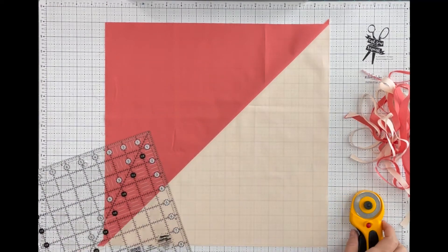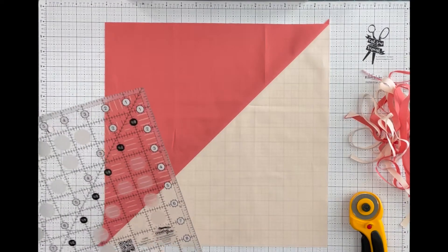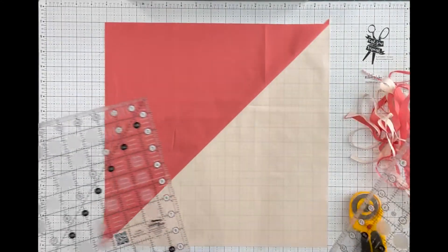So for my Even Flow pattern, my new one, my blocks are squared to 14 and a half inches. I have a 9 and a half inch square and a 6 and a half inch by 24 and a half inch longer ruler.